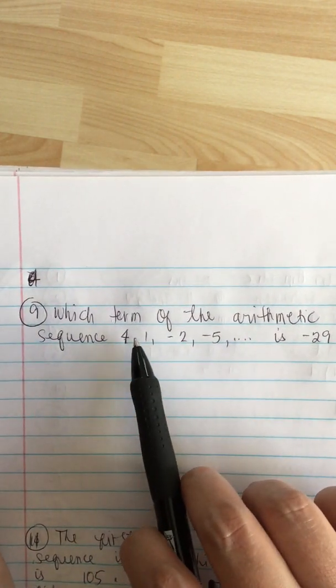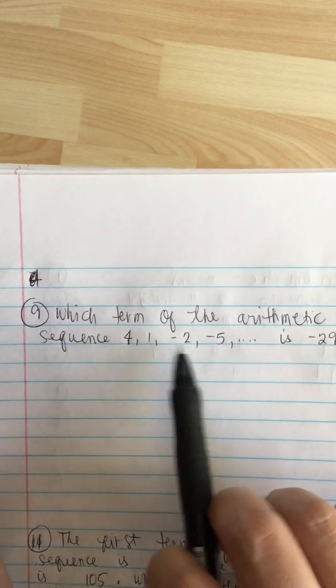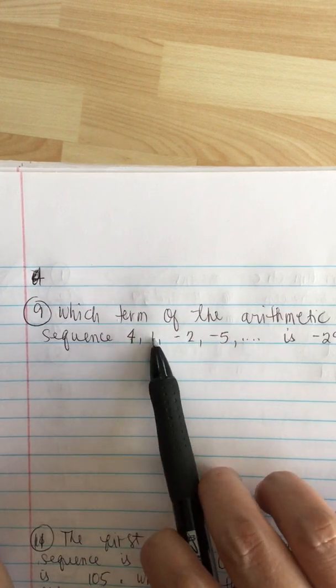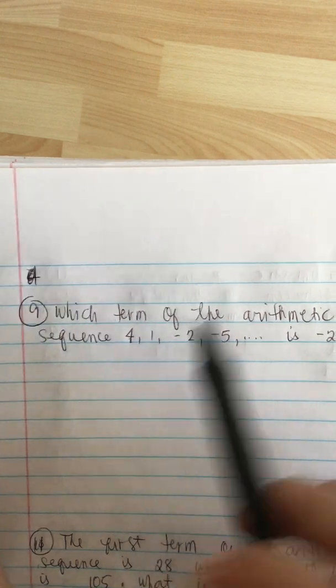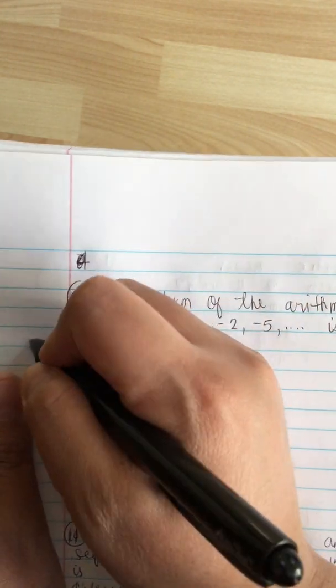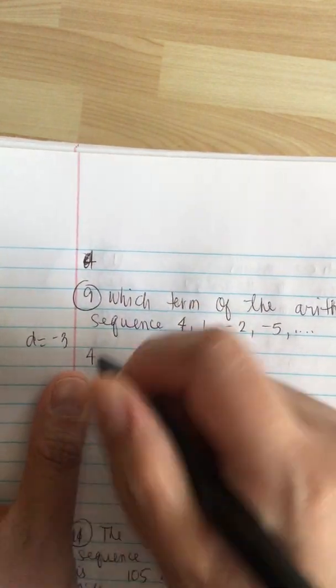So we can say that d is equal to minus 3 because the numbers are getting smaller. So d is equal to minus 3. So we have 4 minus 3 is 1. So 4, a d is equal to minus 3. So 4 minus 3 is 1.